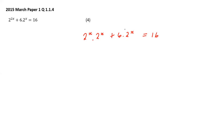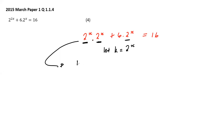I can rewrite 2 to the power 2x as 2 to the power x times 2 to the power x. So we have 2 to the power x times 2 to the power x, plus 6 times 2 to the power x equals 16. There are three instances of 2 to the power x - appearing twice in one term and once in another. Use the K method: let k equal 2 to the power x. Then k squared plus 6k equals 16.